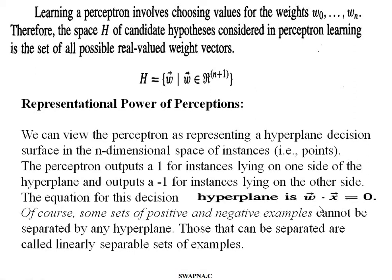The hyperplane equation is represented as w·x = 0. Some sets of positive and negative training examples cannot be separated by a hyperplane, while others can be separated. When we can separate all training examples giving output 1 on one side and minus 1 on the other, we call them linearly separable examples. Some examples cannot be separated in this way.